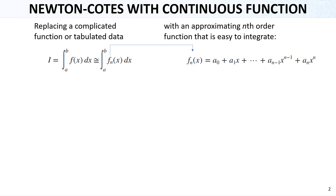When we have continuous functions that we want to integrate, we can use Newton-Cotes formulas by simply substituting a more basic function for the actual function. So let's say this is our actual function that we want to integrate, but because it is difficult to integrate directly, we want to simplify it. We represent the function by another function with terms of x in increasing order, and integrating that approximation equals the integration of the actual f(x).